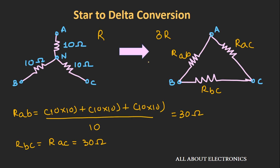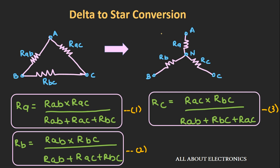Now let's derive the expression for the star-to-delta conversion. In the last video we derived the expressions for the delta-to-star conversion. Let us call these equations 1, 2, and 3 respectively.